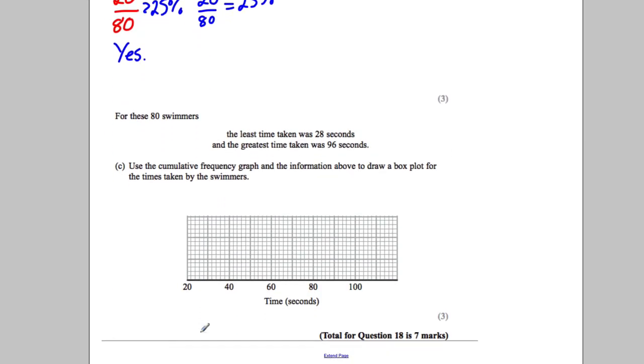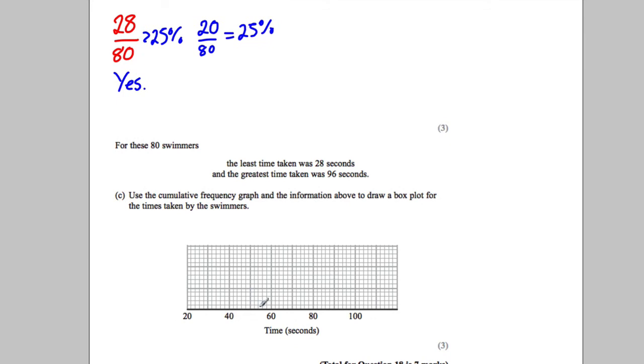Now, for these 80 swimmers, the least time taken was 28 seconds. So here we're going along 20 seconds for 10 squares. Each one's worth two. So I want to mark 28. 28 would be here. And the greatest time would be 96. So there's 90 and you've got three squares because each were two. 92, 94, 96. That would be 96 there.